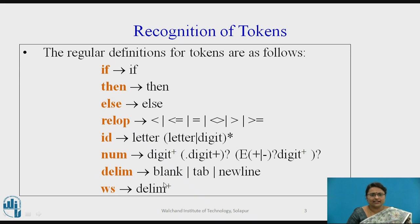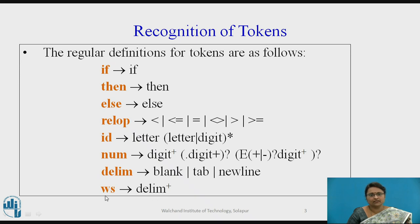For a delimiter — which can be a blank space, a tab, or a newline — the token is delimiter. If more delimiters are present, the token generated is ws, which stands for white space.